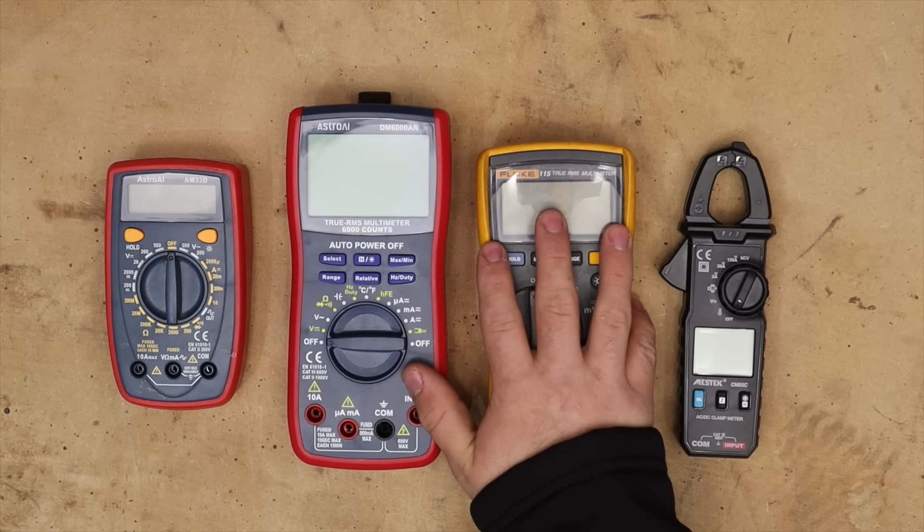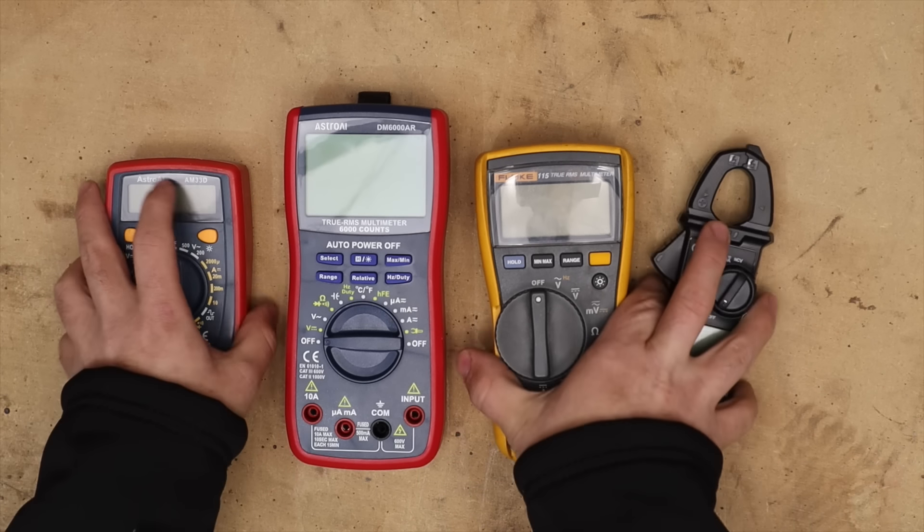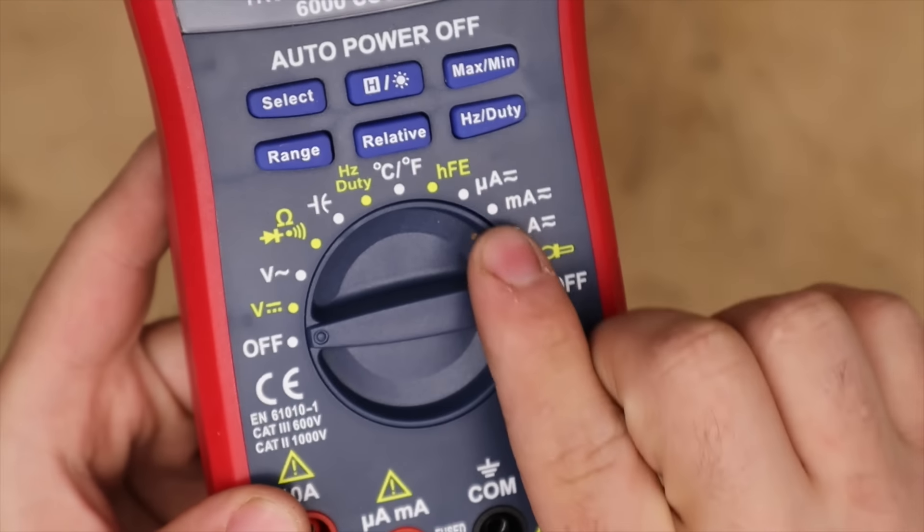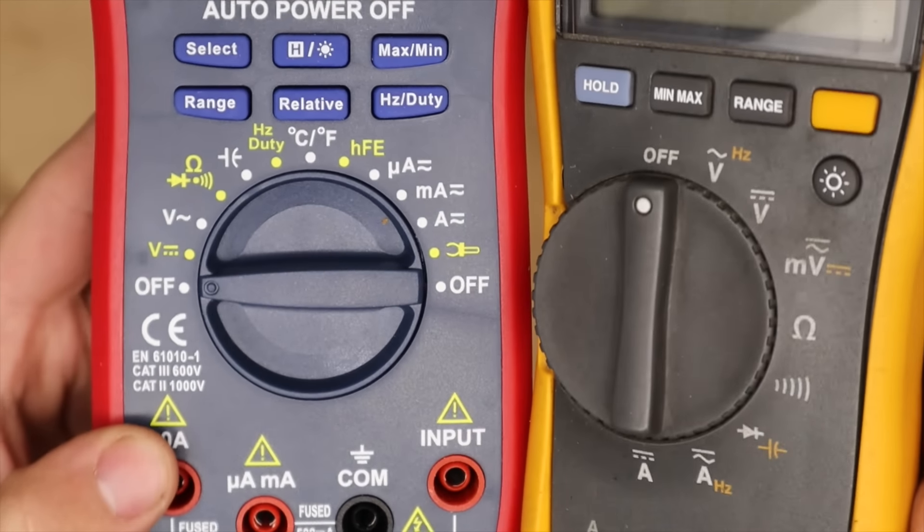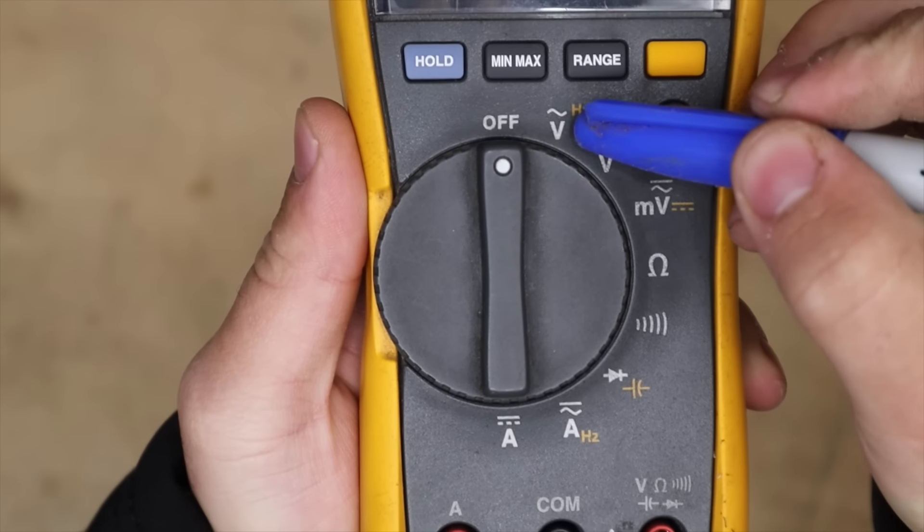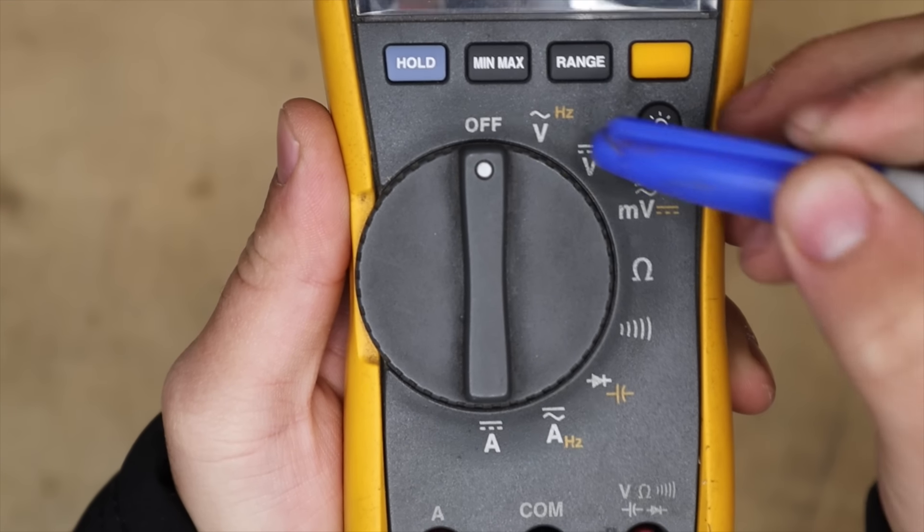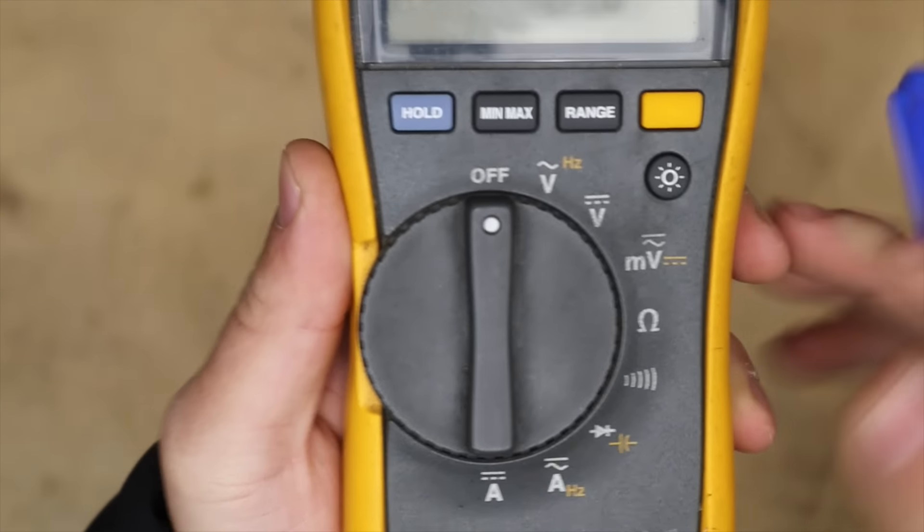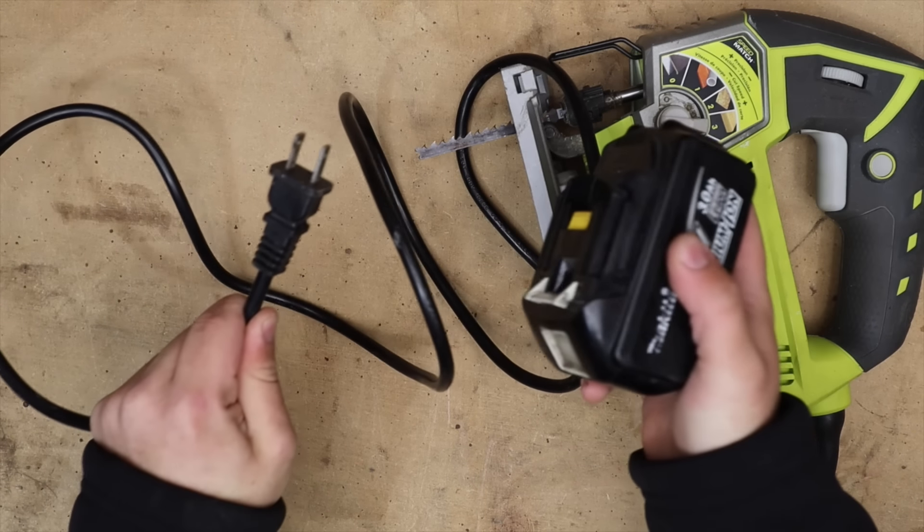Now every multimeter has different features, but there are standard measurements and symbols across most units. So let's take a look at that first. First off we have voltage represented by a capital V.